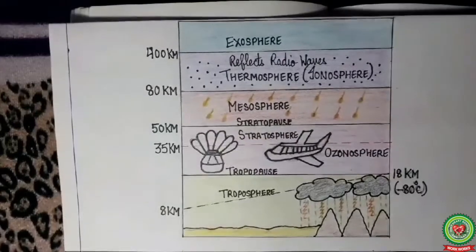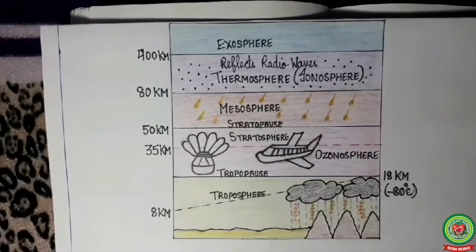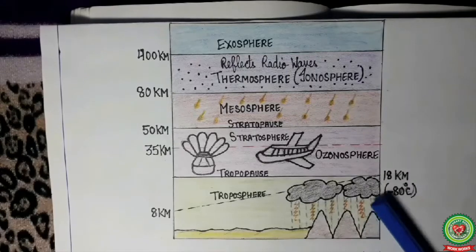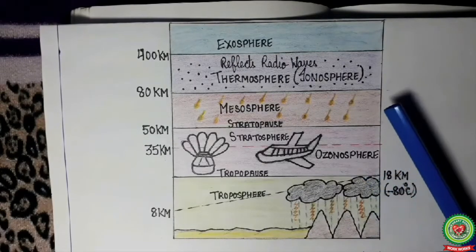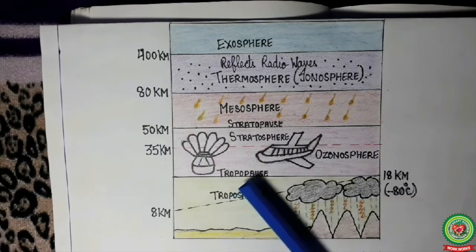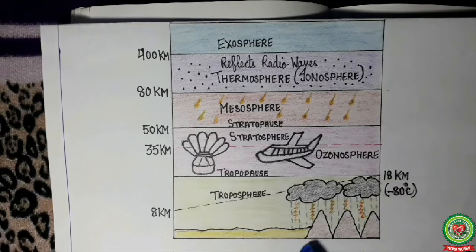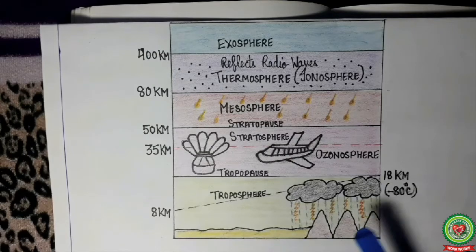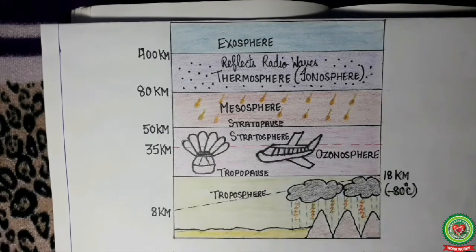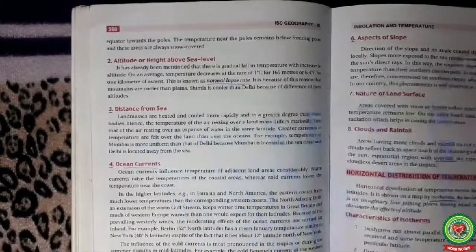The second factor is altitude, or height above sea level. As we move high in the atmosphere, the temperature decreases — after every 165 meters of height the temperature decreases by 1 degree Celsius, which is also termed as the normal lapse rate. So we can say that mountains are cooler than the plains due to their great height.